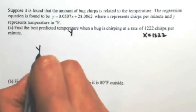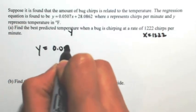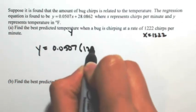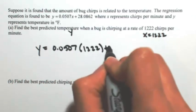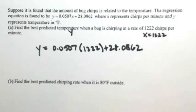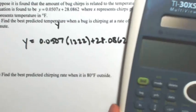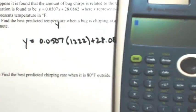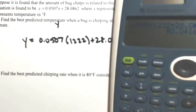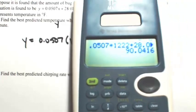So I'm just going to plug in this value. So y is equal to 0.0507 times 1,222 plus 28.0862. So just plugging that into the calculator, I get about 90.